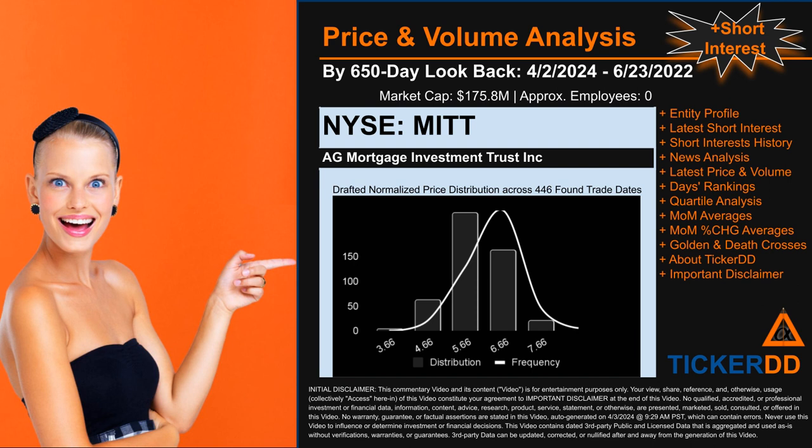The bar chart is the generated distribution, and the overlaid line graph, if it is generated, is the frequency of the prices on the x-axis. We will enhance this look-through as our model progresses in the next iteration. Remember that this is just a drafted, in-progress observational model to best fit abstracted third-party data into various opinionated views.